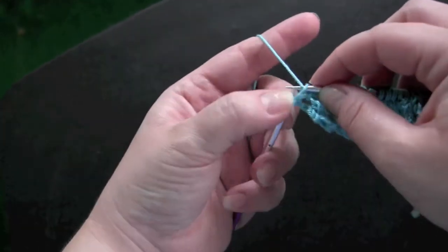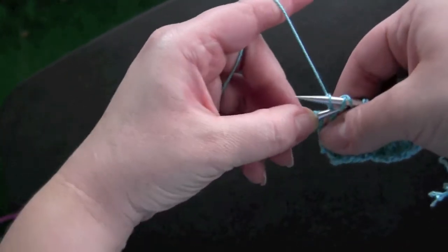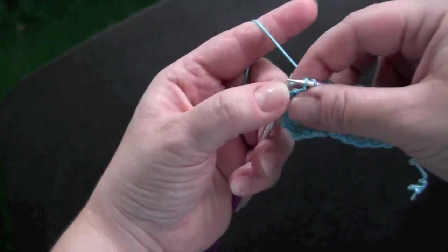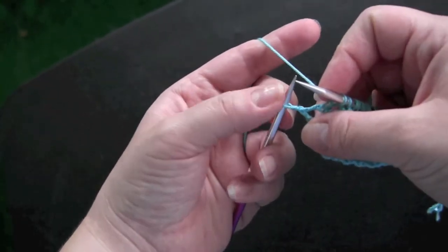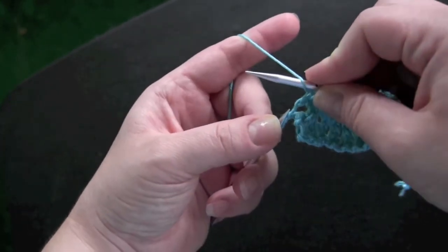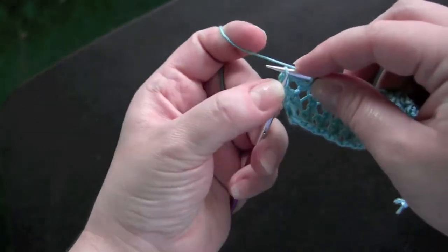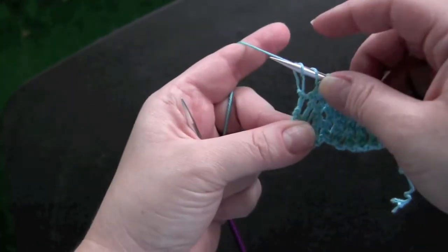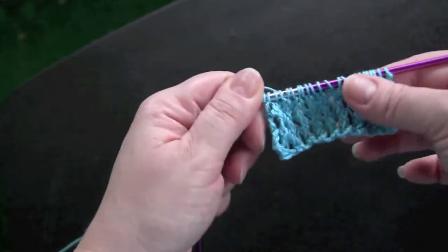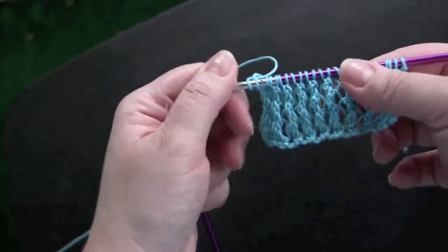When you get to the last stitch, knit it, and don't forget to make your last yarn over. There should be a yarn over before your last stitch, which is just knit. First and last stitch of each row is just knit.